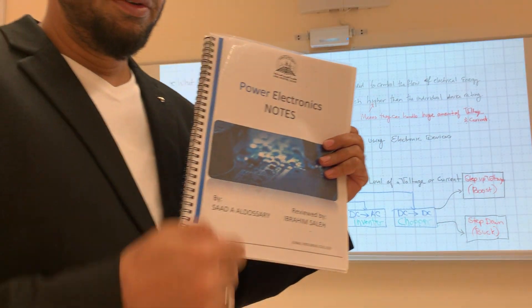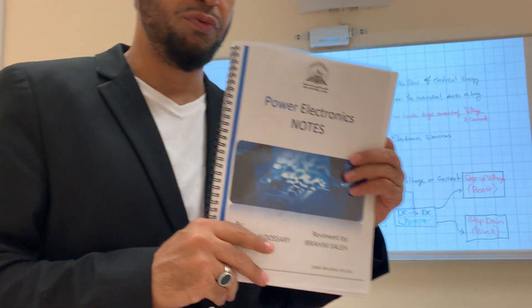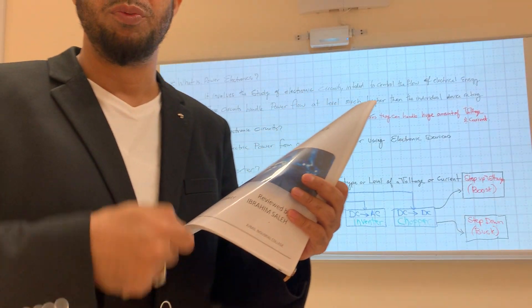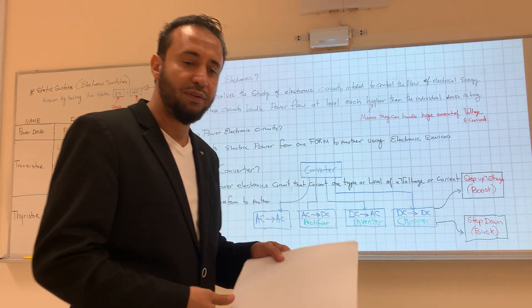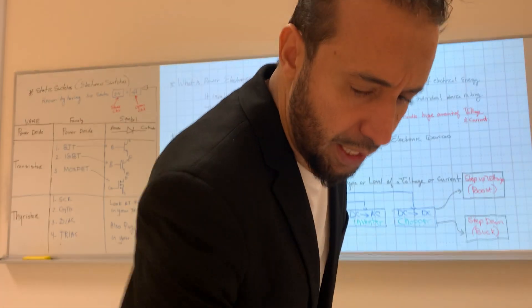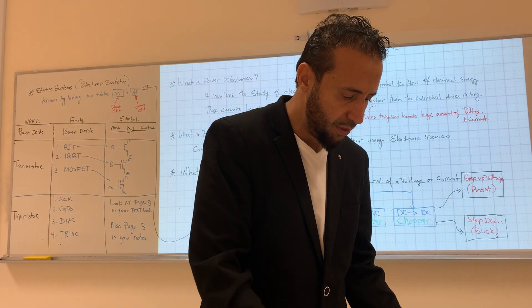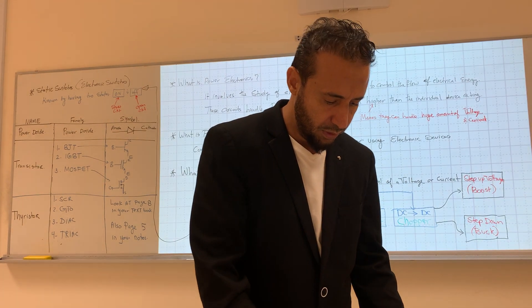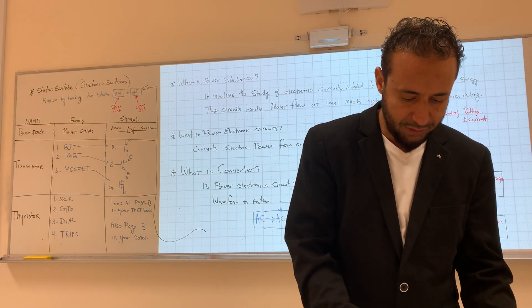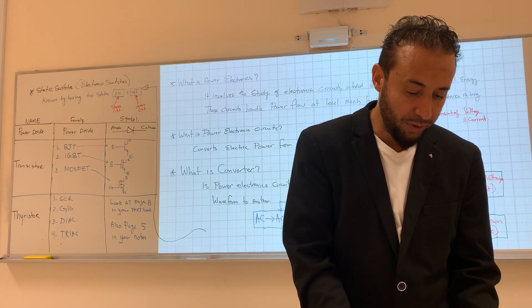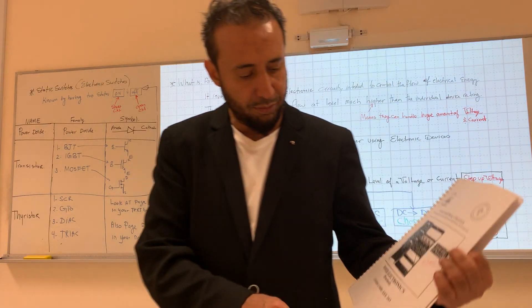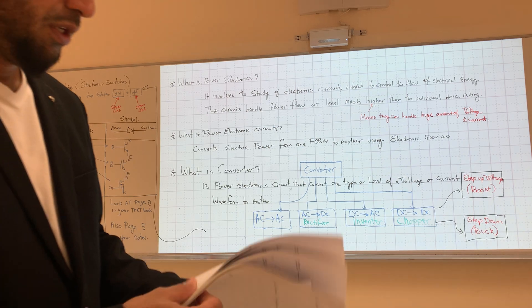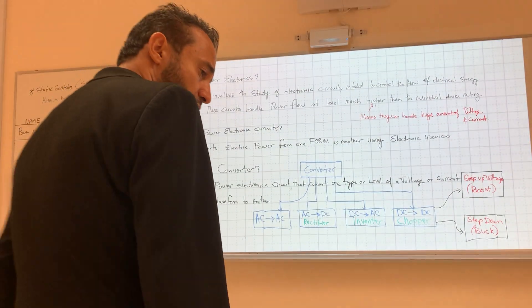Make sure you have a copy of the notes and follow them along with the textbook. I will give you the pages you need to follow. You don't have to write notes unless you want to practice drawing waveforms. This here is the lab manual for Power Electronics Practical, which is E203.